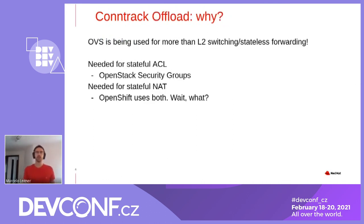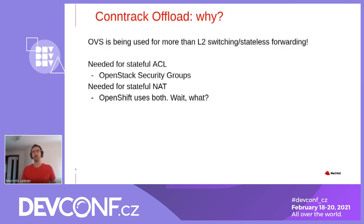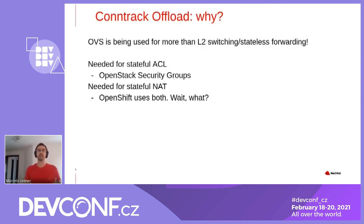And why Conntrack offload? Why do we need it? That is because OVS is being used for way more than L2 switching or stateless forwarding these days. With the hardware offloading that we had for OVS so far, we could match on packet headers, do some actions like encapsulate, add VLAN tag, pop VLAN tags, decapsulate, and even do stateless NAT — but we can't do stateful stuff. If you require stateful things, you couldn't do offload so far. And that's required by OpenStack security groups, which consists of stateful ACLs, and is also heavily used by Open vSwitch routers as it relies on NATs to work.